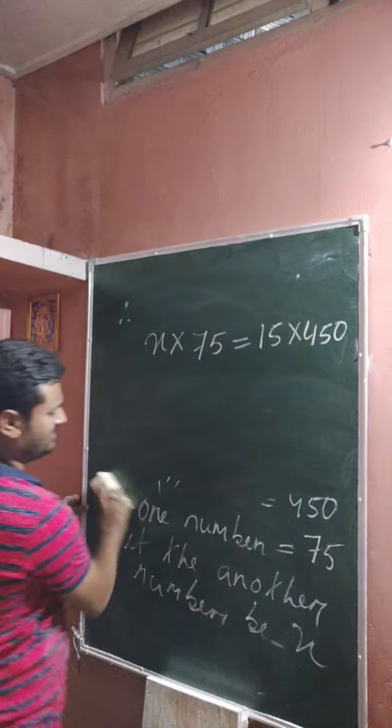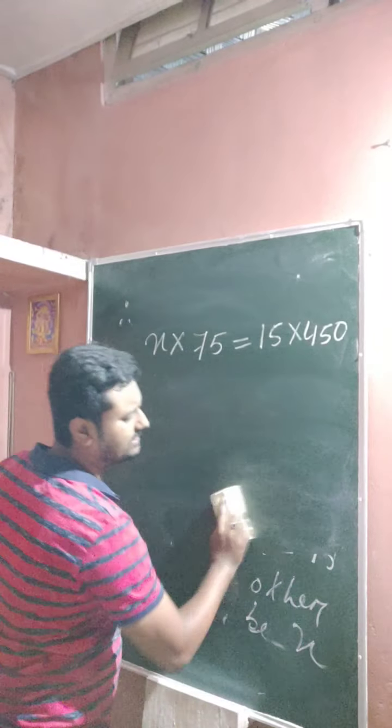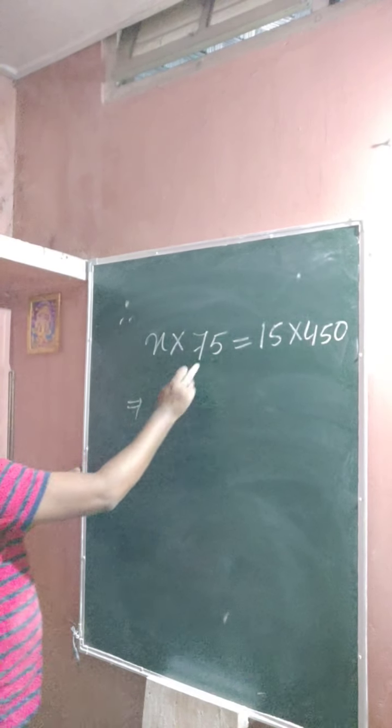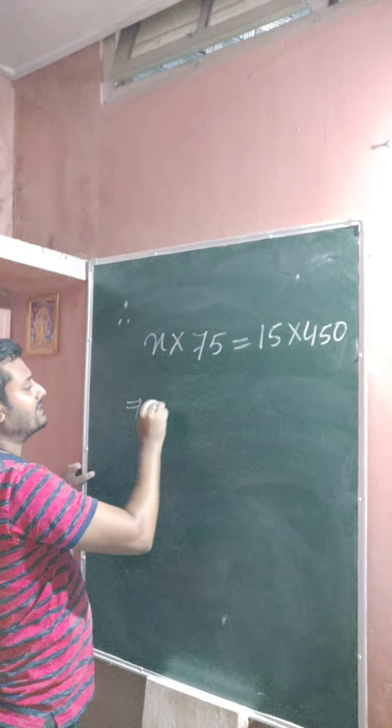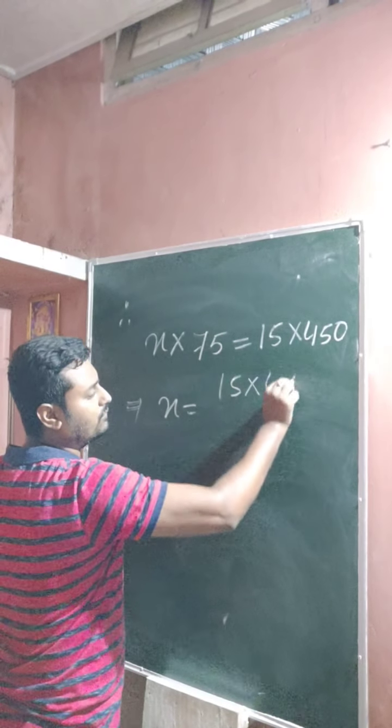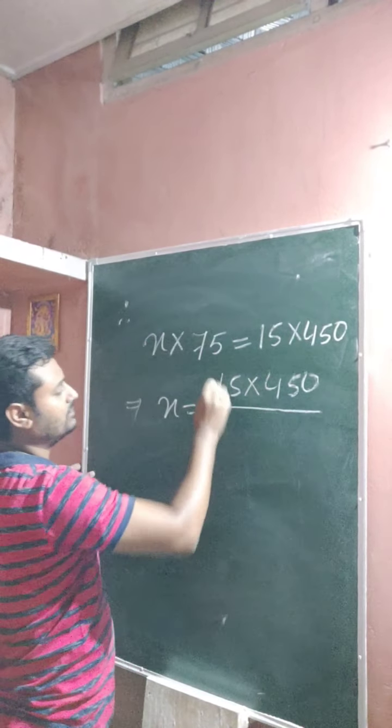In class 6, again, no need to write. Just we know, there, this one, this one already also known, okay? So 75 is multiplied here. When it goes to that side, it becomes division. Right hand side remains same: 15 into 450. This comes to the denominator.